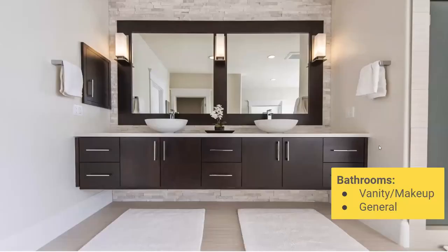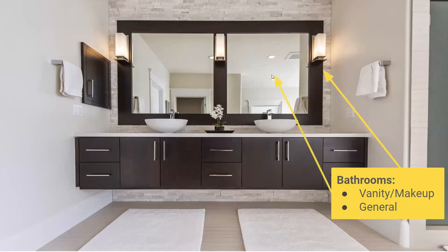For bathrooms, ideally it's nice to have lights to the left and right of your face — for makeup, you won't have as many shadows creating dark circles under your eyes. But you don't always have space, so you might just have a fixture above. This is your wall sconce, and that's going to help with lighting for makeup. There are also can lights for general lighting in this bathroom too.